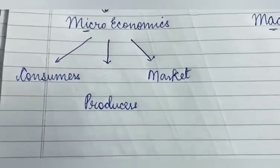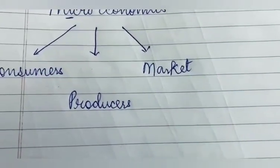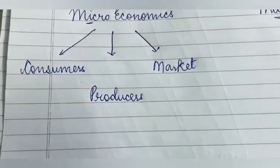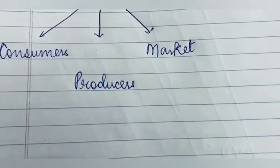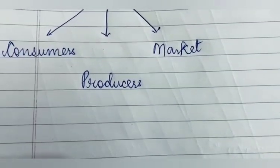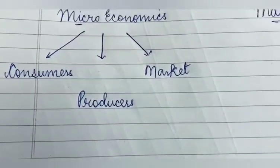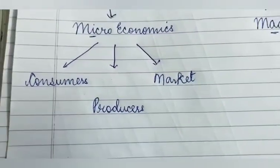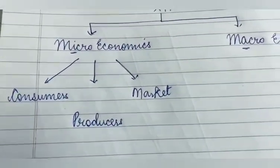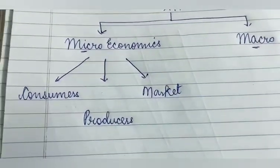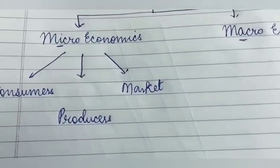Consumers ke under aapka alag-alag chapters hain like demand, consumer's equilibrium, elasticity of demand. Producers ke point of view se aapka producer's equilibrium, supply — yeh sare chapters hain. Market mein aapka market equilibrium aur forms of market aate hain. So let's begin the first and most basic chapter of economics — that is demand.